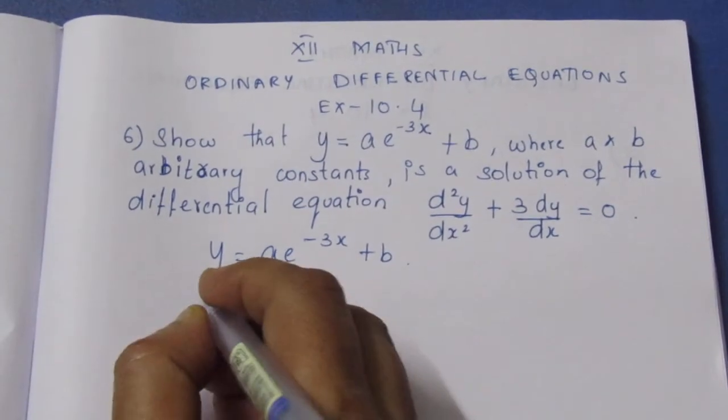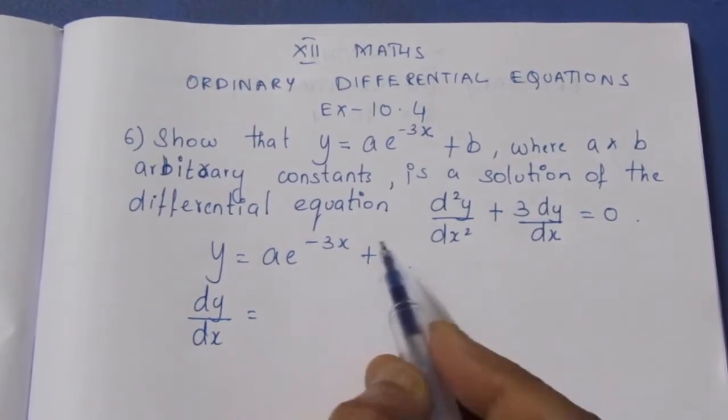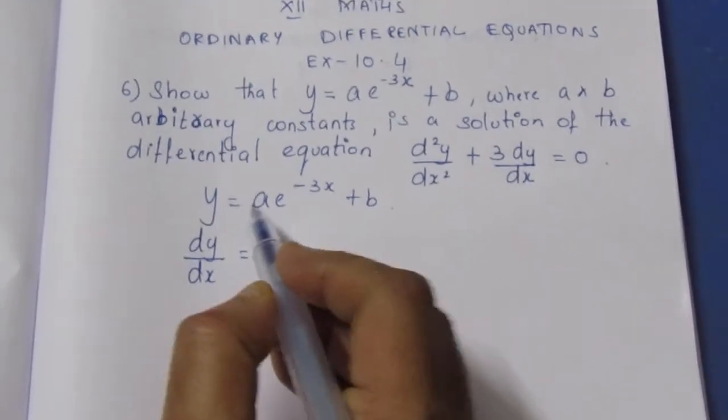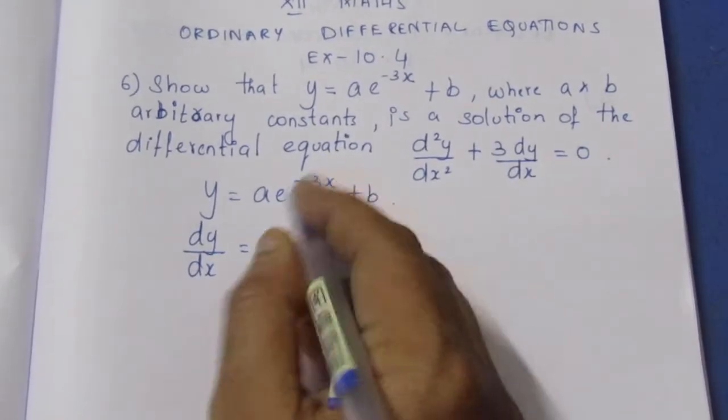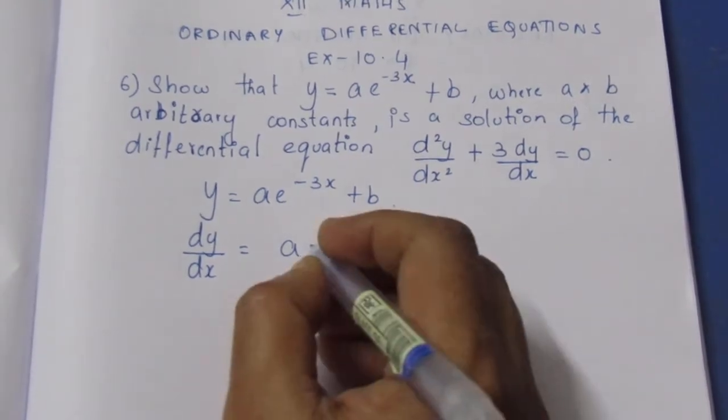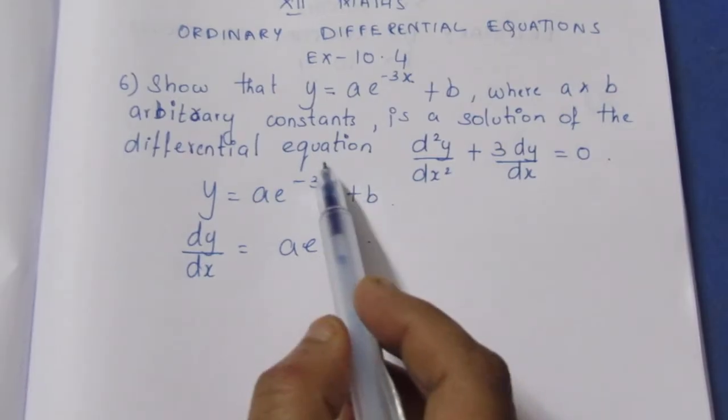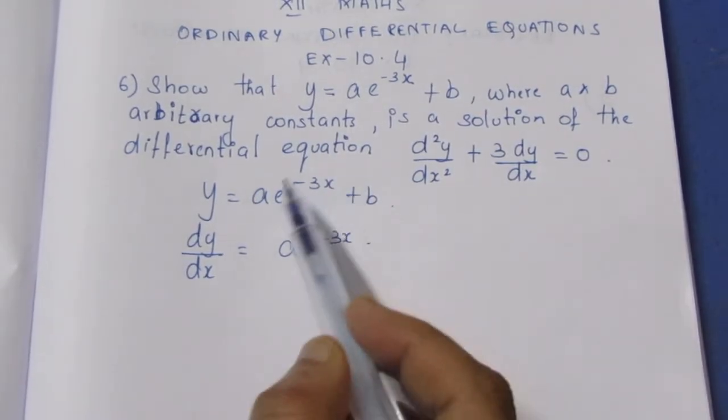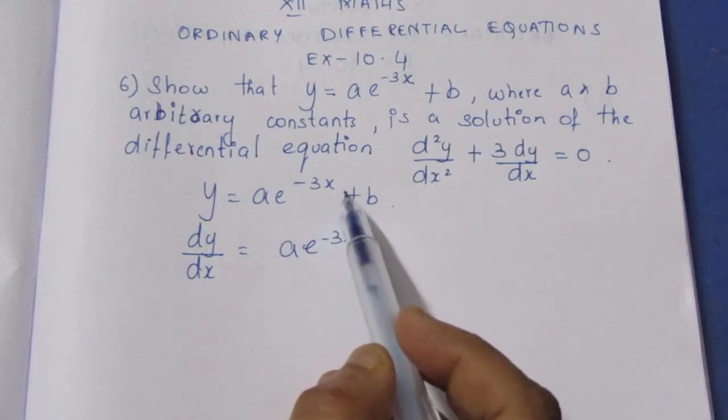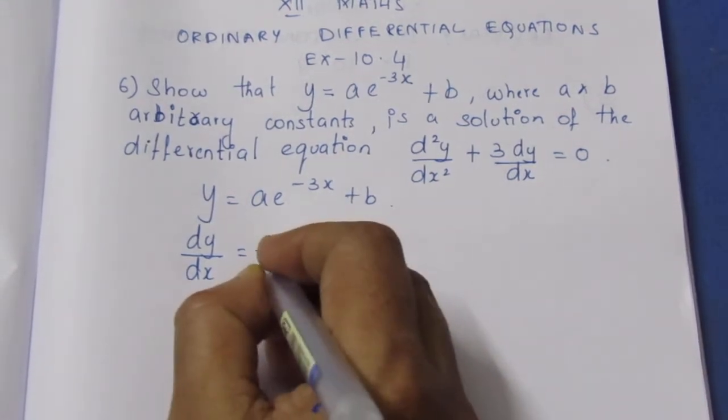First, let's find dy by dx. Differentiating with respect to x, a and b are constants so b differentiates to zero. For ae to the power minus 3x, using chain rule: e to the power minus 3x times the derivative of the inner function minus 3x, which is minus 3. So dy by dx equals minus 3ae to the power minus 3x.